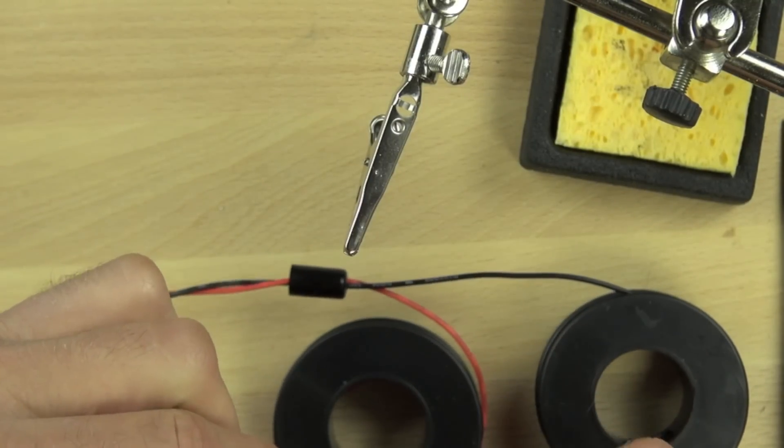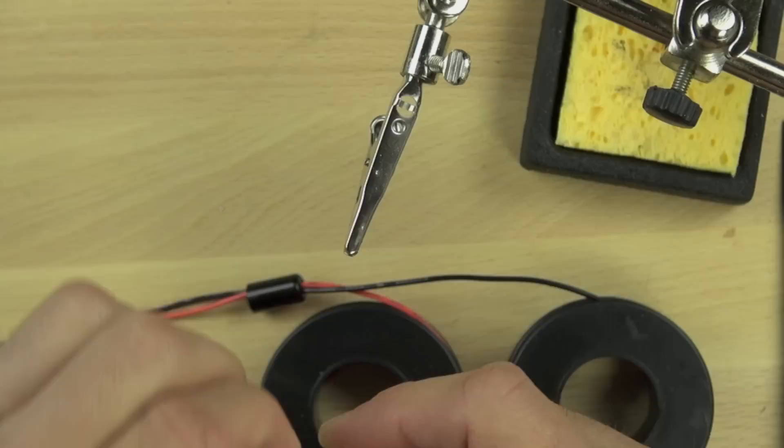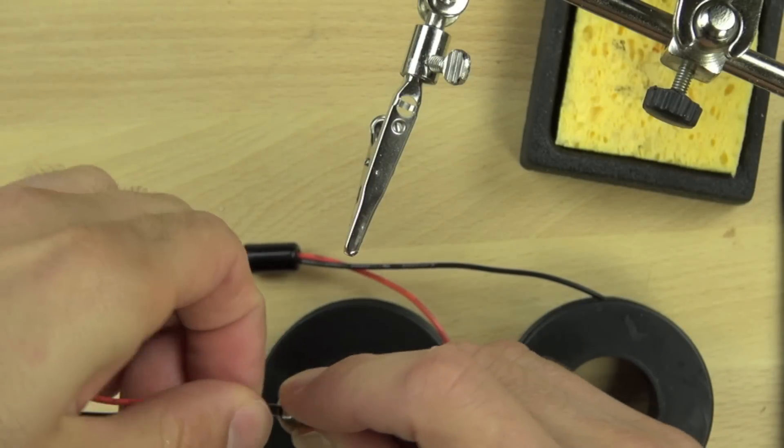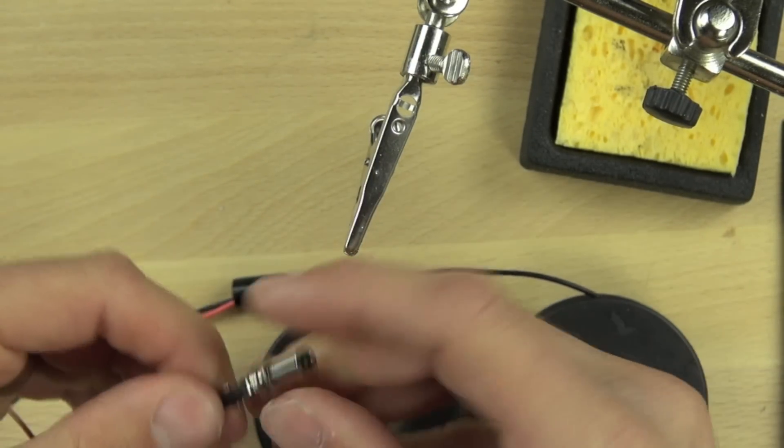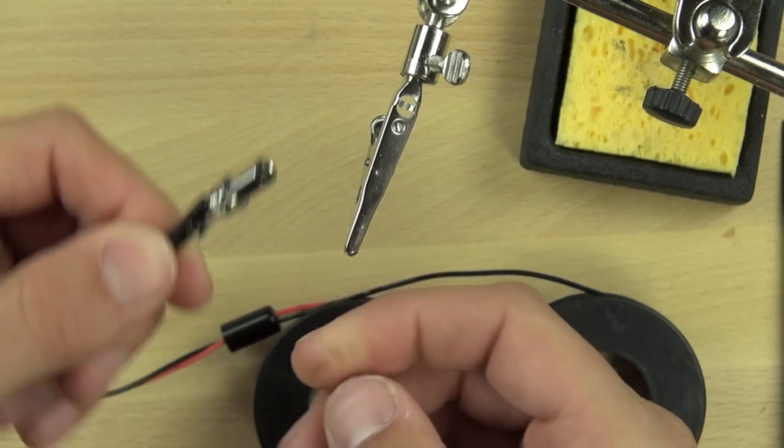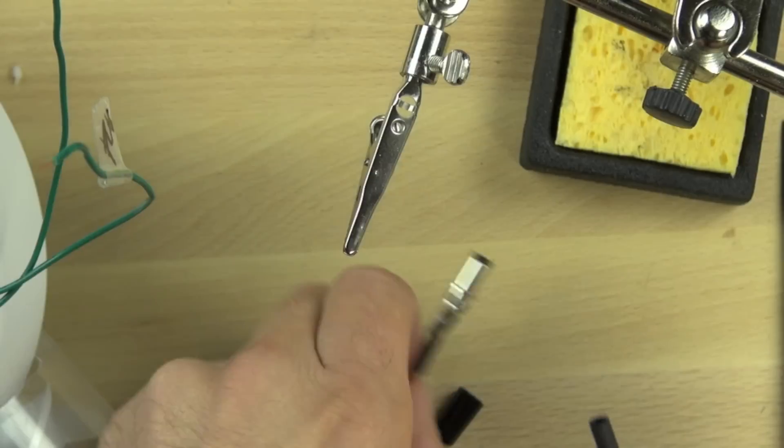Once we've got those two wires soldered in place, we need to put something between them, otherwise they'll short out. We're going to put a piece of electrical tape between the two connections. That'll keep them from touching each other and shorting out.